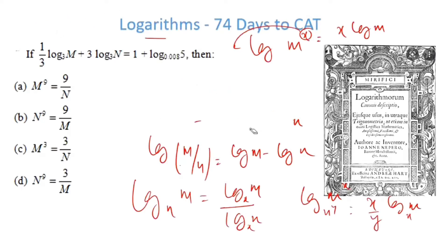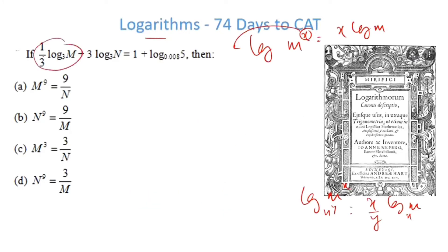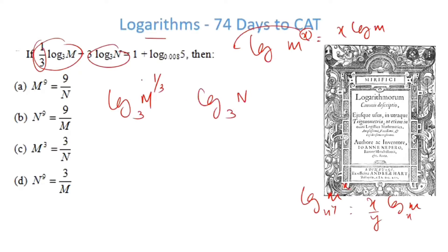In the first problem, I have (1/3) · log m base 3. I can write this as log(m^(1/3)) base 3, moving the 1/3 to the power. Similarly, I write log(n^(1/3)) base 3. Now I have a plus sign, so log m + log n becomes log base 3 of the product of the two.